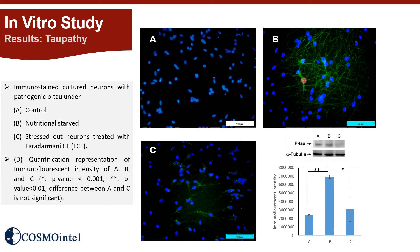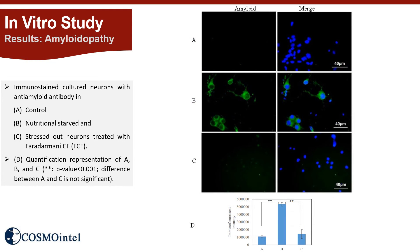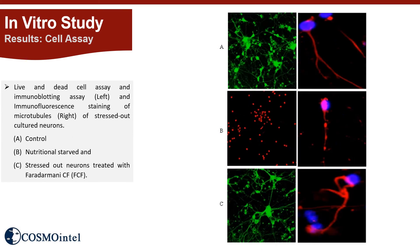The immunofluorescent intensity of cis-phosphorylated tau protein across three groups is shown in this figure. While there was a profound increase of neurotoxic cis-phosphorylated tau in the stressed cultured neurons, FCF treatment eliminated P-tau from the cells. Similarly, aging stress induced significant amyloidopathy in the stressed culture, and FCF treatment blocked this pathogenic process. Cell assays showed that FCF treatment prominently suppressed neurodegeneration under aging stress. Also, there was profound microtubule disruption in the stressed neurons, and FCF treatment healed this, confirmed by immunofluorescent staining.